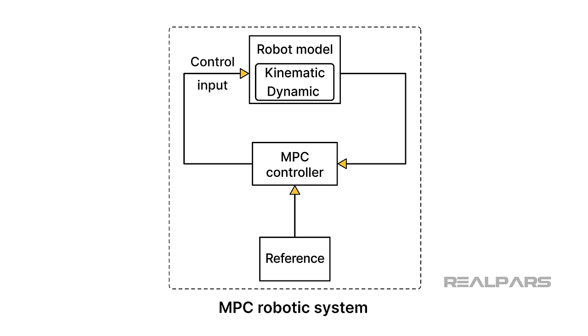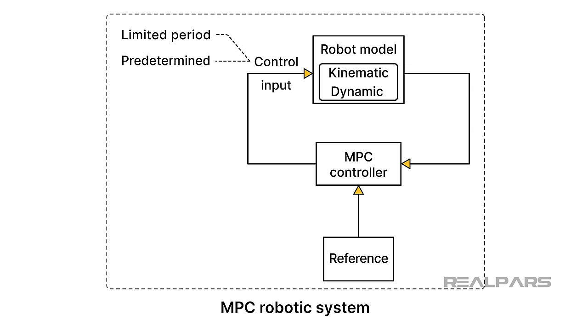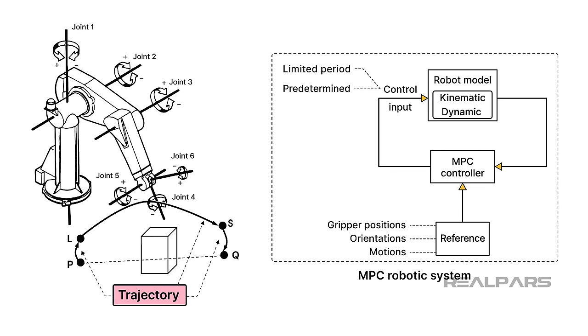We'll start with the MPC controller components. The MPC controller uses the robot model, kinematics, and dynamics to calculate the optimal control inputs over a predetermined limited period. The output of the MPC controller is the calculated control input trajectory for the robot. The reference block represents the desired robot behavior, including things like gripper positions, orientations, and motions to follow, also referred to as trajectories.